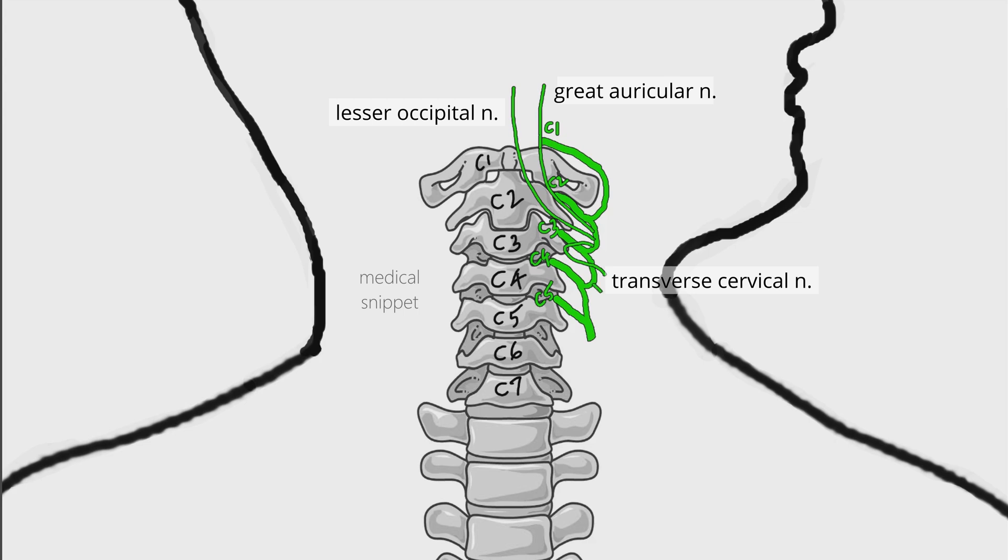The fourth sensory nerve arises from the loop of C3 and C4. It is named as supraclavicular nerve.